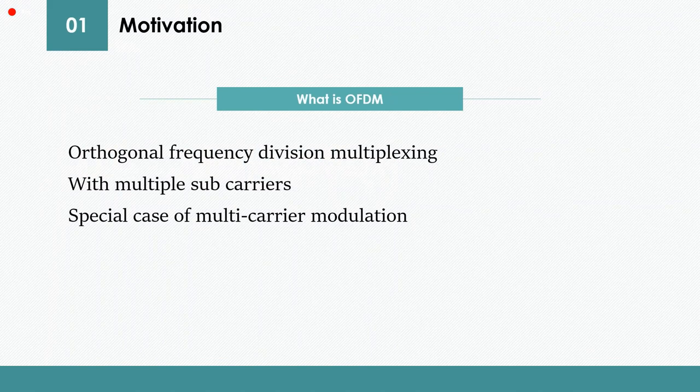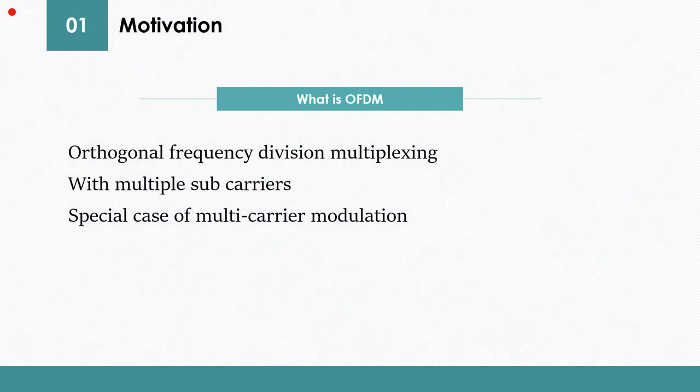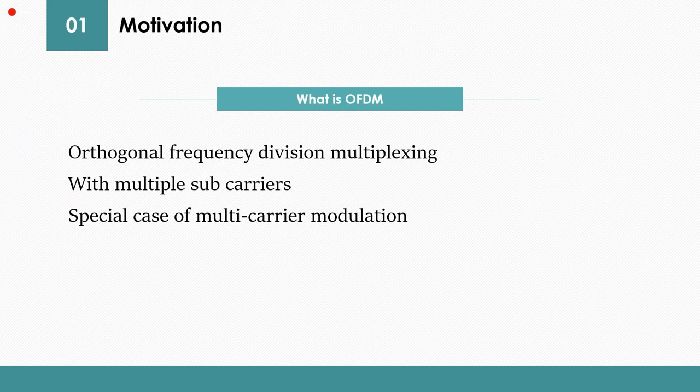The first question is what is OFDM? OFDM is orthogonal frequency division multiplexing, with multiple subcarriers, so it's a special case of multi-carrier modulation. OFDM transmits several data in parallel through multiple orthogonal subcarriers, which can increase the symbol width, reduce the frequency bands occupied by the symbol, and resist frequency selective fading caused by multipath.